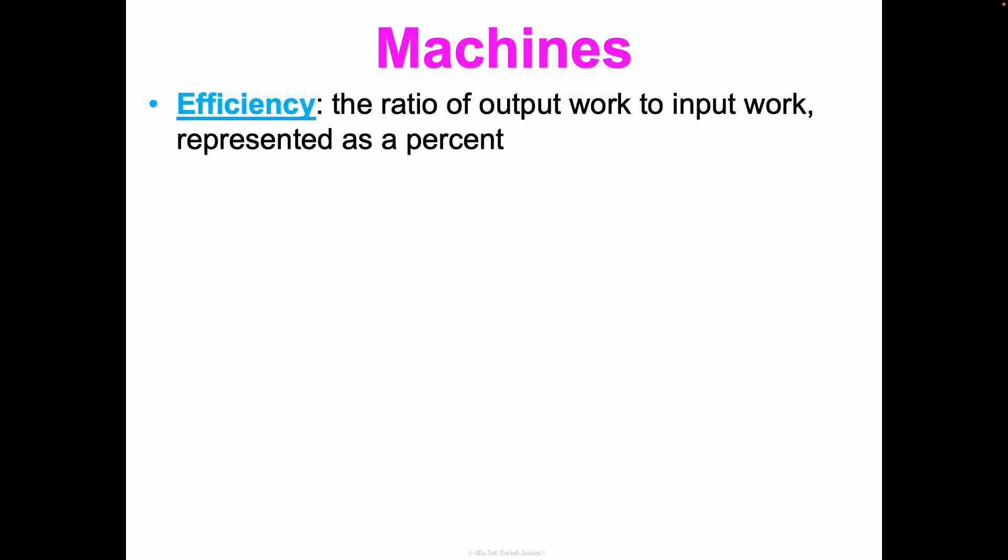Now, two last terms I want to introduce you to. Because machines are useful because they make work easier. And they do that by changing the way work is done. And so they can increase speed or they can change direction of a force or they can increase the force that we're able to output. And so ways that we can understand how effective machines are are by looking at how efficient they are and how effective they are or their mechanical advantage.